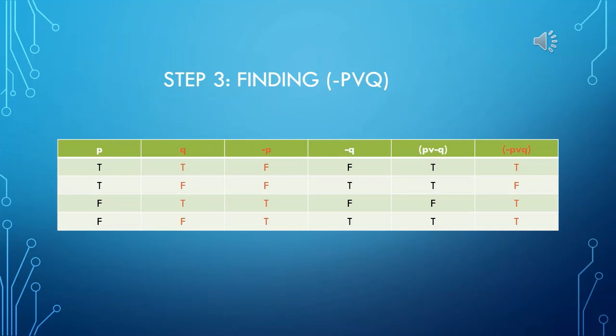In step three, we are going to find the negative P or Q section of the compound proposition. The column Q and the column negative P is what we are going to use in this step. T or F is T, F or F is F, T or T is T, F or T is T.